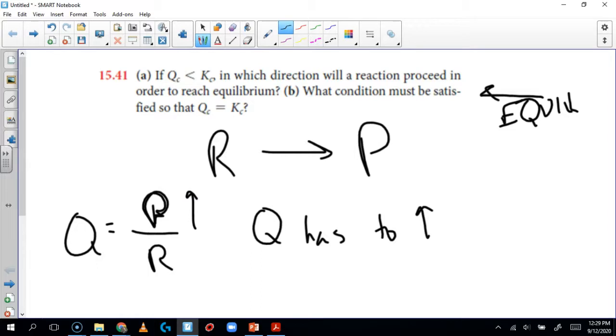And so because the only way we're going to make products is by having the reactants make the products, that means that the reactants goes down. So the only way we can get Q to get bigger is for the products to go up and the reactants to go down. So when that happens, that means the reaction has to shift toward the products. We have to make more products. So the reactants are going to proceed toward the products there.